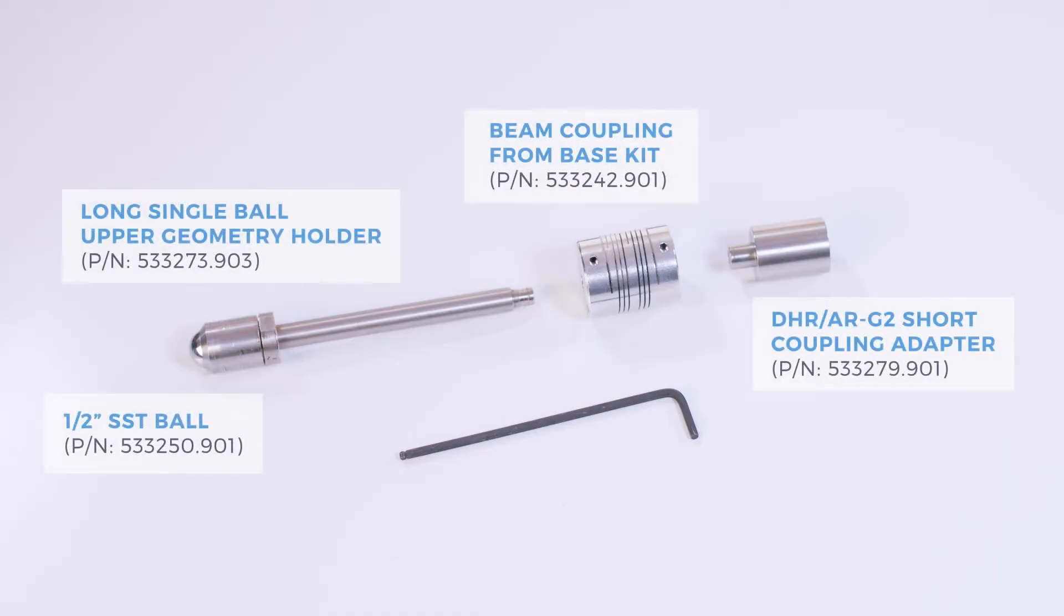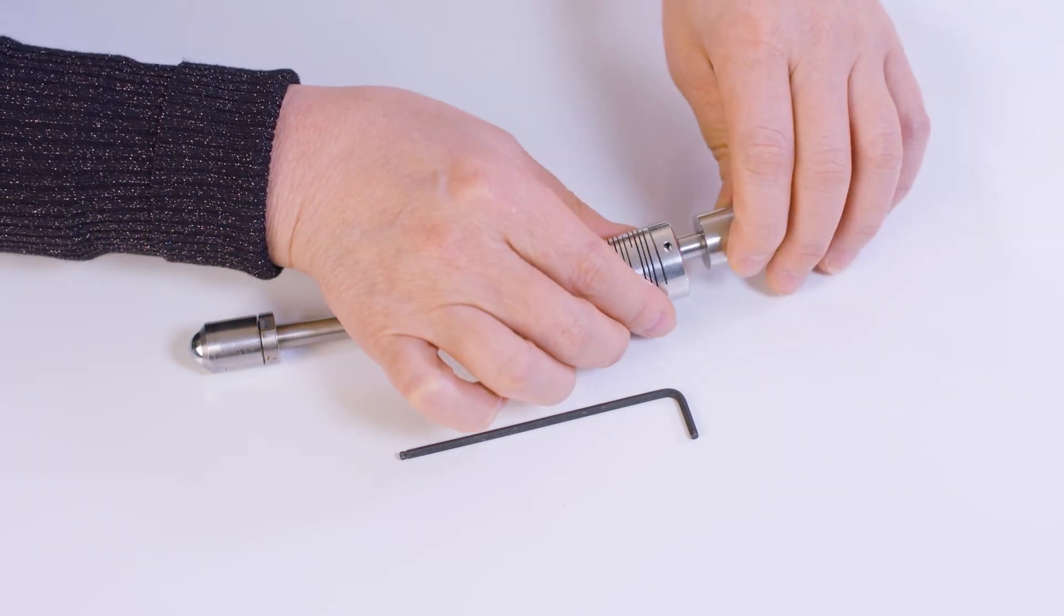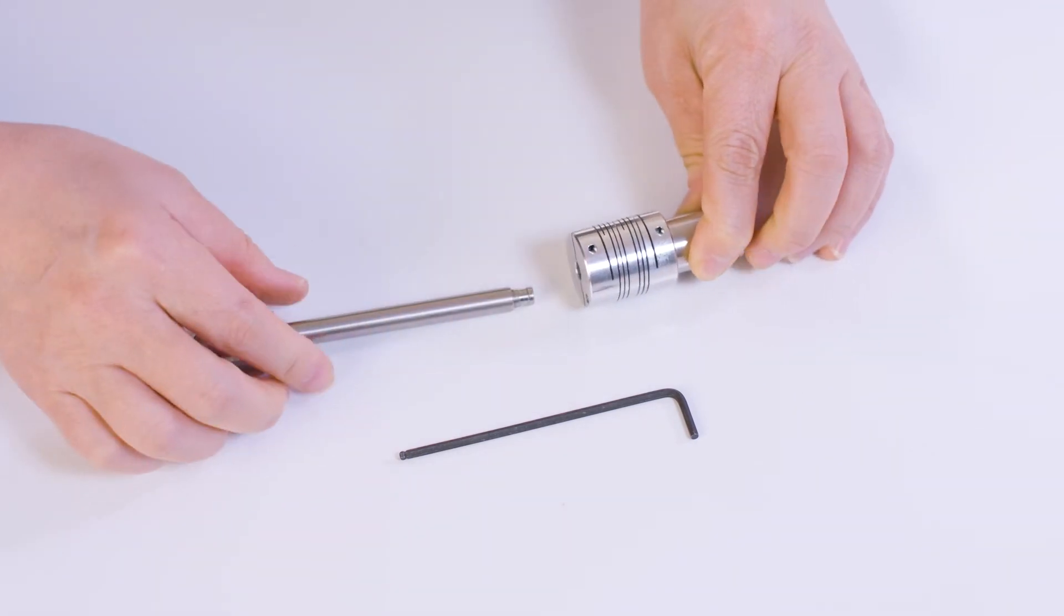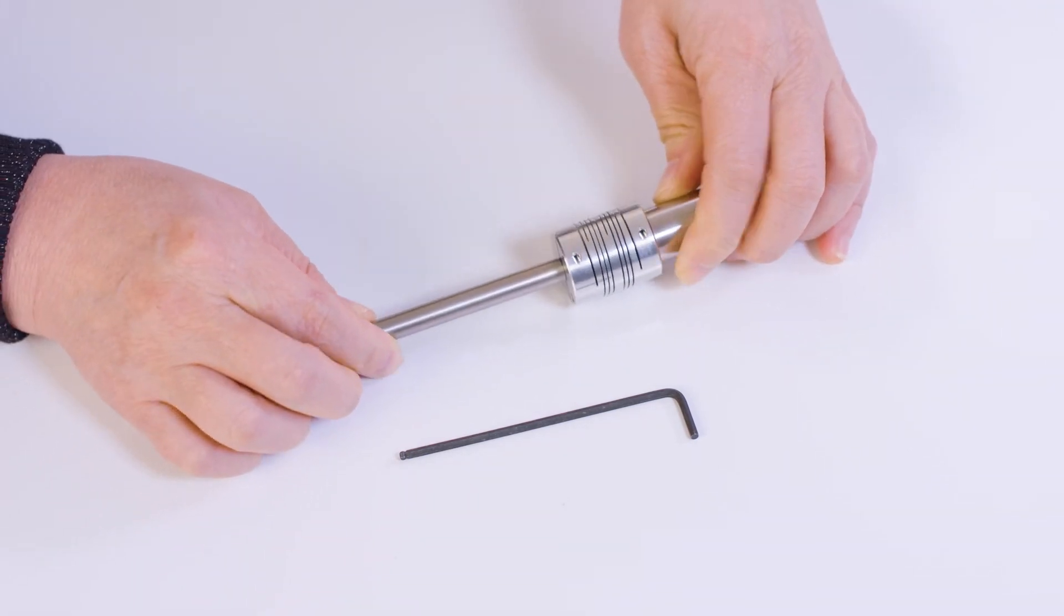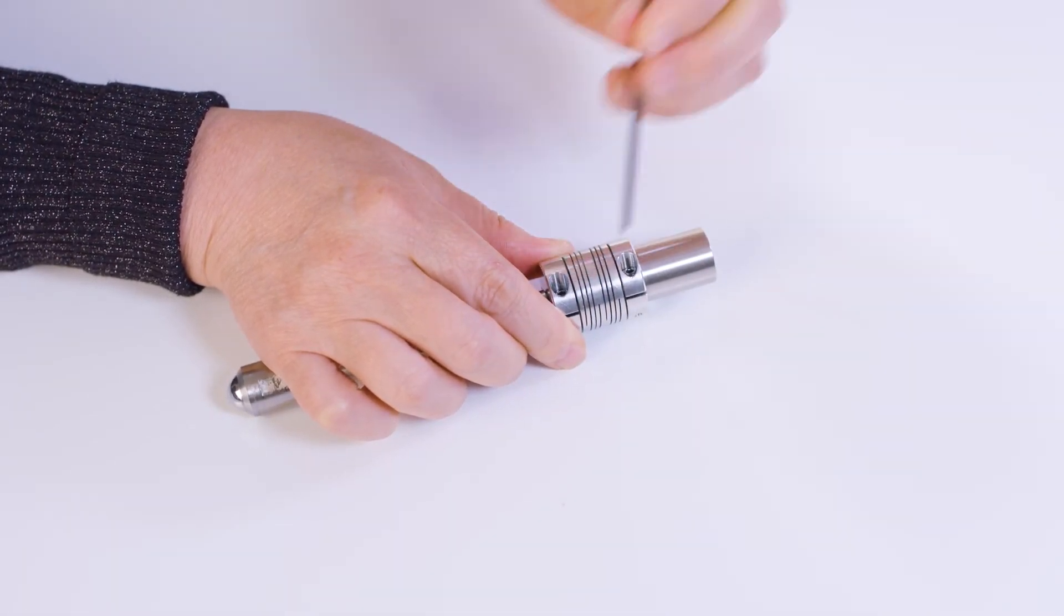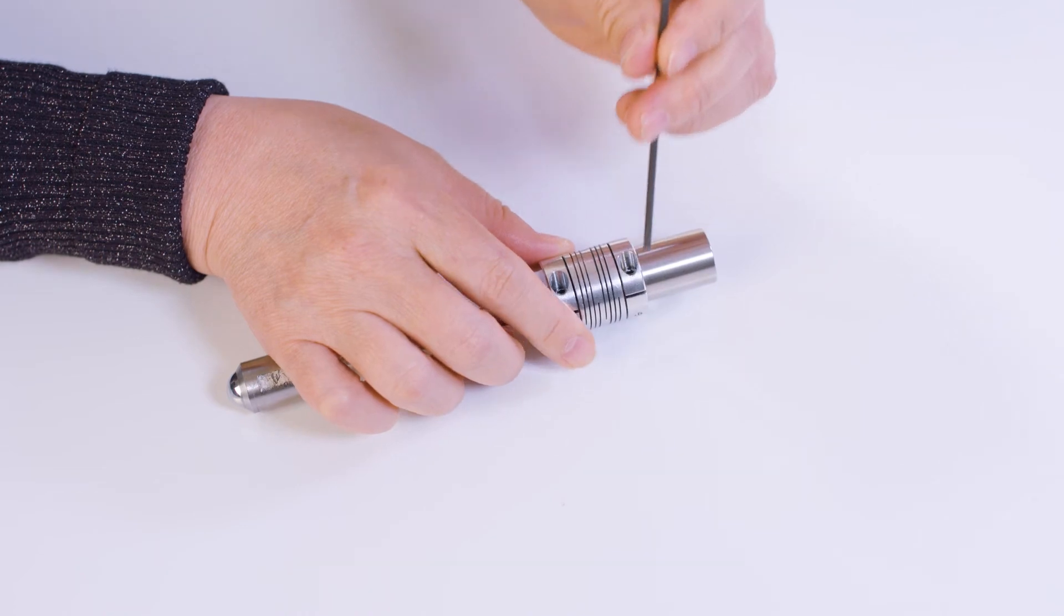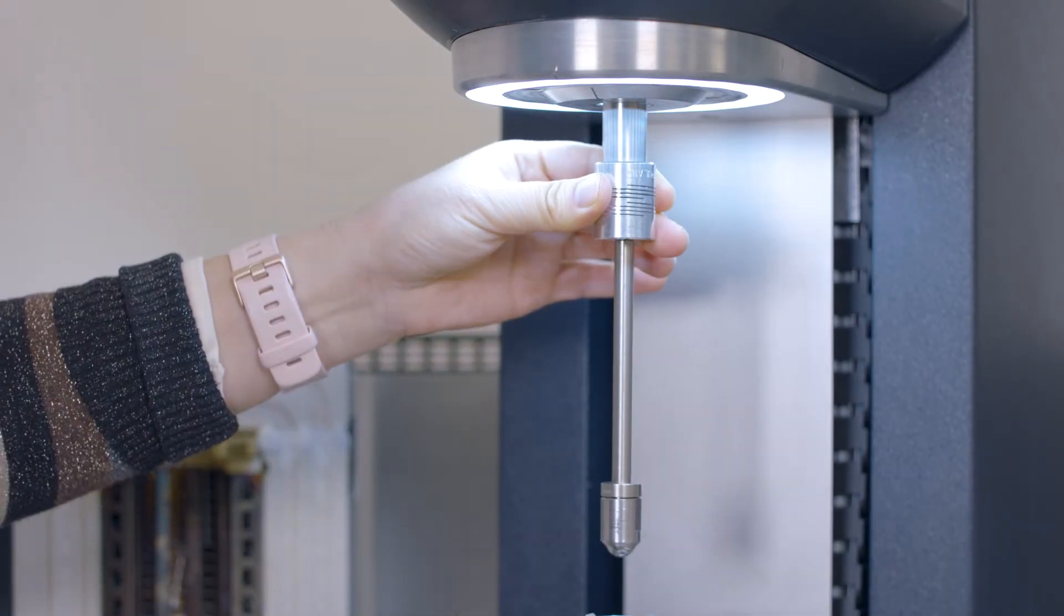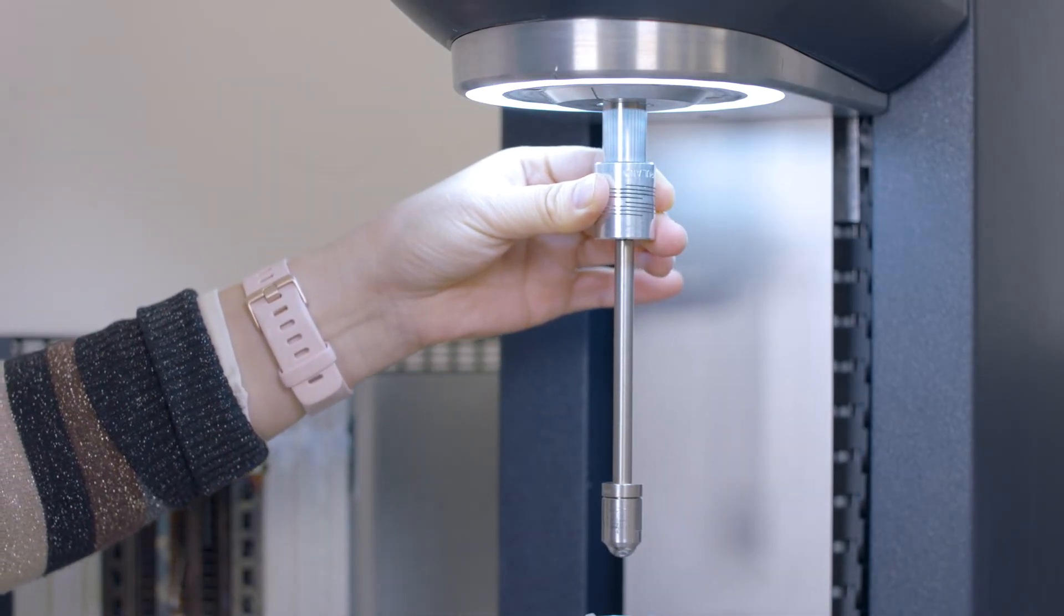For the top fixture, you will need to use this short coupling adapter. Insert the beam coupling, and then attach this long single ball upper geometry holder with a half-inch ball in it. Tighten the screws on the side. After that, install this upper geometry to the top of the rheometer.